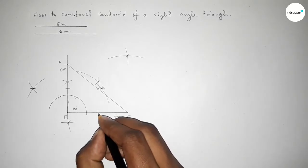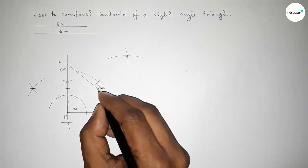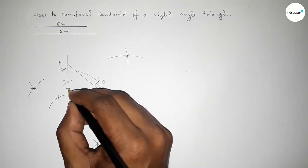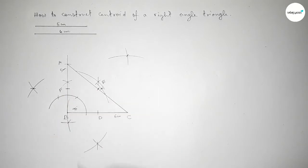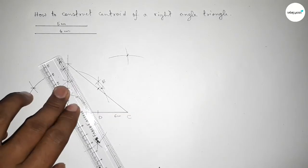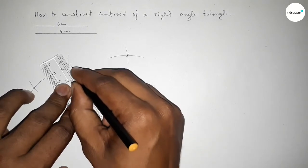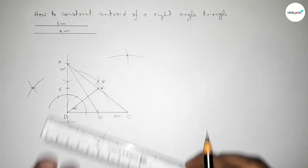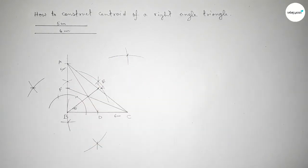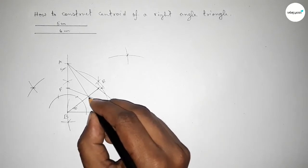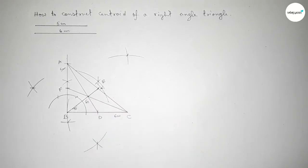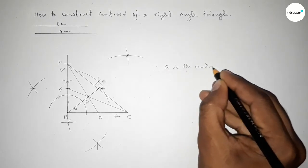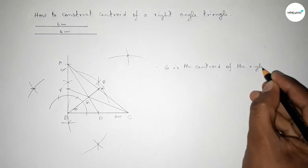So this is the midpoint of line BC — taking here point D. This is the midpoint of AC — taking here point E. And this is the midpoint of AB — taking here point F. Now first joining median AD, then joining median BE, and lastly joining median CF. The three medians intersect at point G — therefore G is the centroid of this right angle triangle ABC.